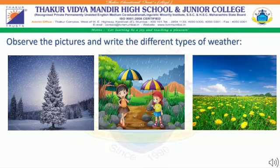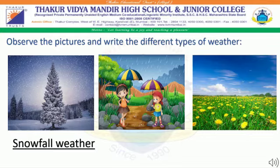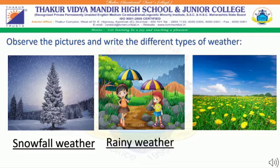Exercise 1: Observe the picture and write the different types of weather. Exercise 1 — yes, it is the picture of a snowfall. Exercise 2 — yes, it is the picture of a rainy weather. Exercise 3 — yes, this is the picture of a sunny weather.